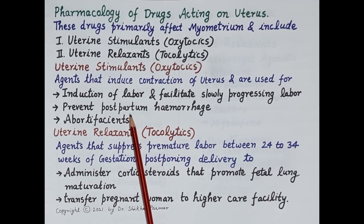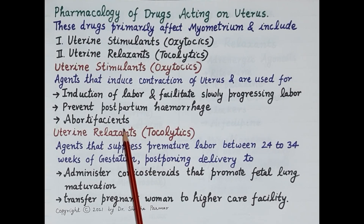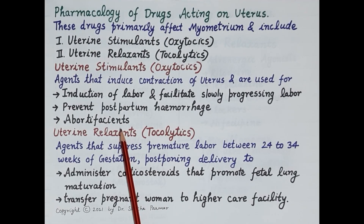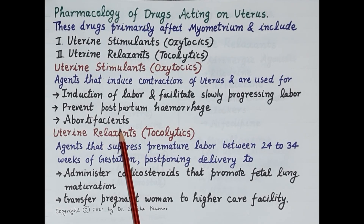Some uterine stimulants, like prostaglandins, are also used as abortifacients — they are used for the induction of abortions during the second trimester of pregnancy.